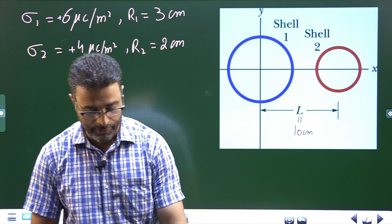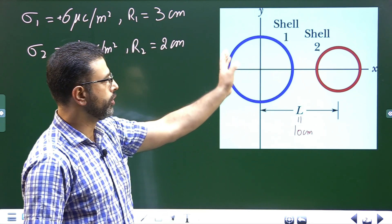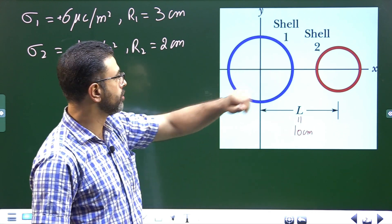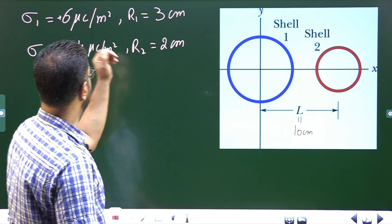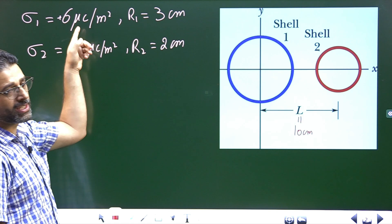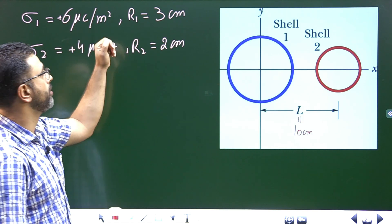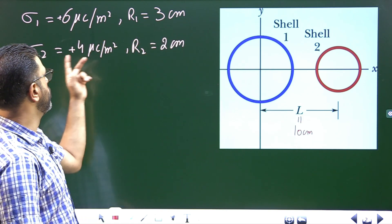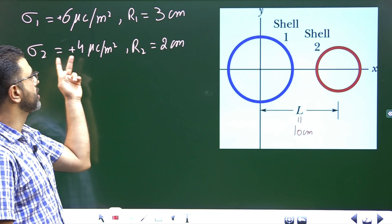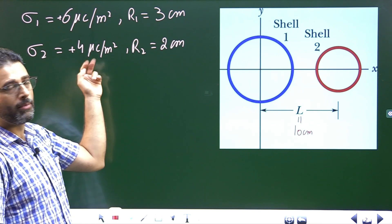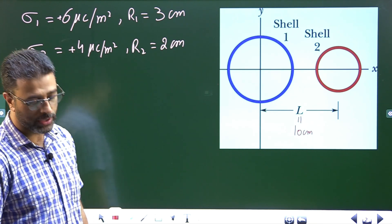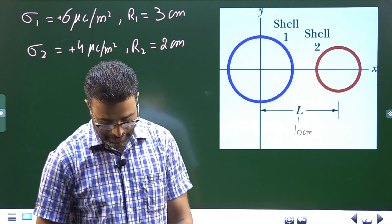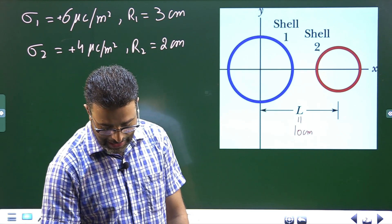We have two uniformly charged spherical shells. For shell one, charge density is plus six micro coulomb per meter squared and radius is three centimeters. For shell two, charge density is plus four micro coulomb per meter squared and radius is two centimeters. We need to find the net electric field at x equal to two centimeters.